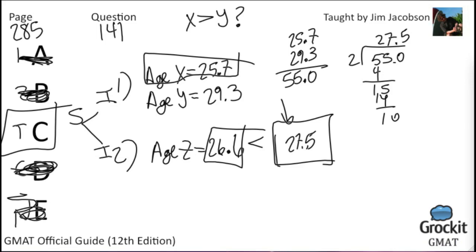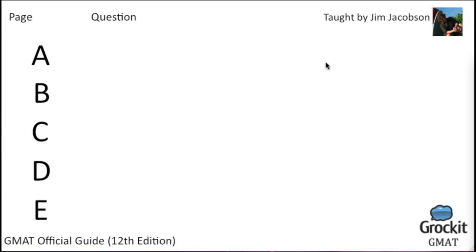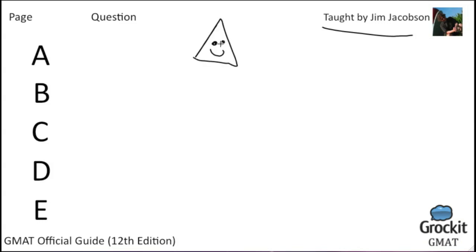So the weighted average logic told us something meaningful — Committee X had more members because it skewed the combined average younger than the strict midpoint. That's enough for today. My name is Jim Jacobson. Thanks for watching Grockett OGTV, GMAT edition — cover to cover, question by question, with explanations and occasional artwork. Tune in next time when we'll pick up on page 285 with question 142.